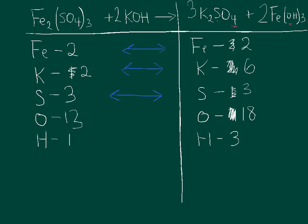My sulfur is balanced, but potassium is no longer balanced — I now have six on the product side but only two on the reactant side. I'll change the reactant-side coefficient to six: one potassium times six gives six potassiums. Now potassiums are balanced at six and six. My irons are still balanced at two and two, and sulfur is balanced as well.